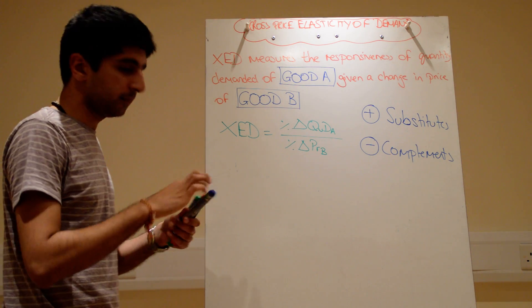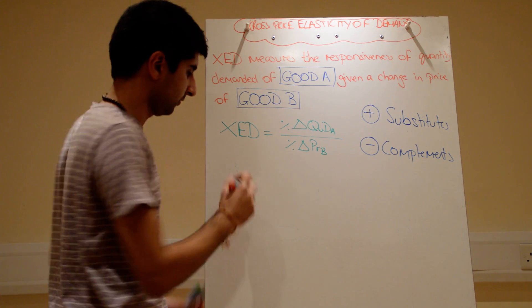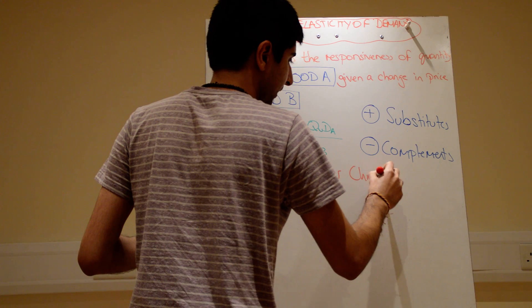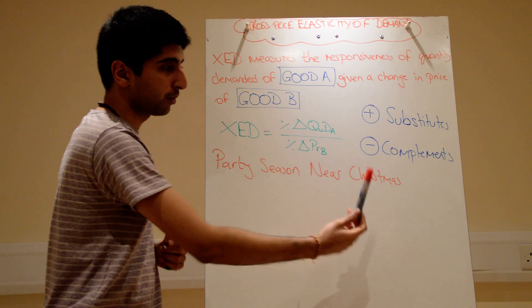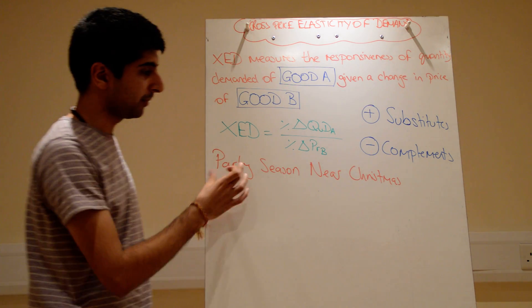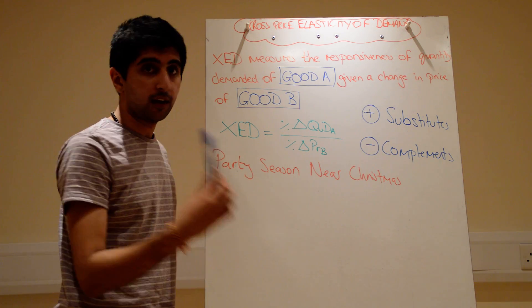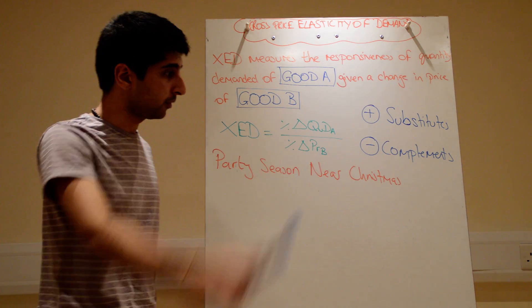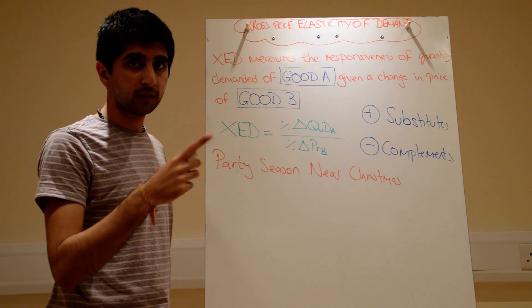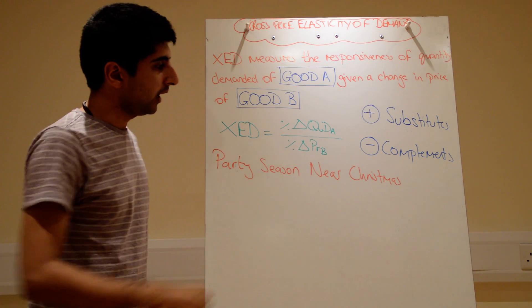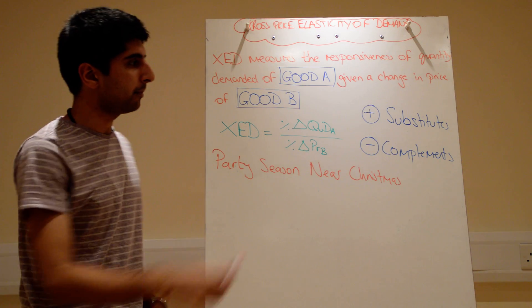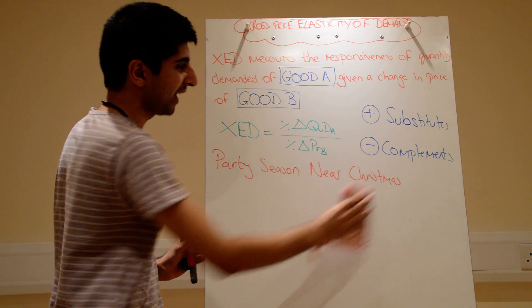But before I explain why, simple way to remember: just think when you're approaching Christmas, party season. Party season, near Christmas. I'm making this video, it is near Christmas, not that near Christmas, a month and a bit to go. But anyway, as you approach Christmas, party season: positive substitutes, negative complements. Party season, near Christmas. If you're ever forgetting in an exam, it's brilliant to have at the back of your mind. But it makes logical sense as to why these signs are the way they are. So substitutes: the price of Coke goes up, positive. Quantity demanded of Pepsi goes up. Demand shifts, quantity increases. So positive, positive, positive. Go the other way: the price of Coke goes down, quantity demanded of Pepsi goes down. Negative, negative gives you a positive. You can do the same for complements. Positive substitutes, negative complements. Party season, near Christmas, will never take you down.